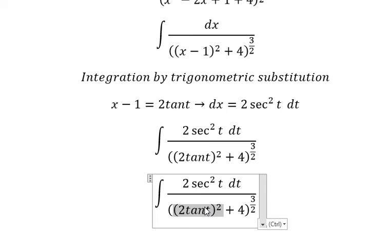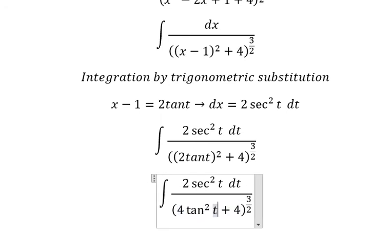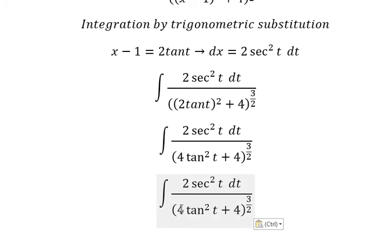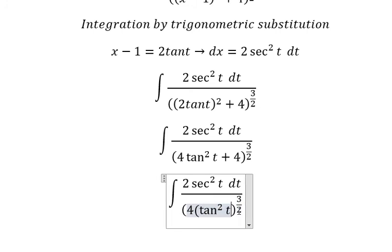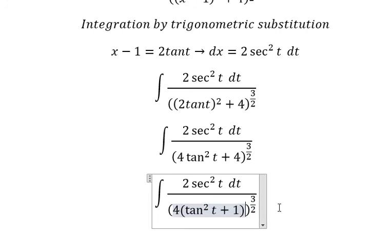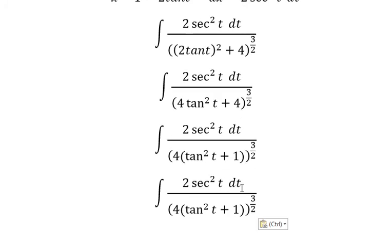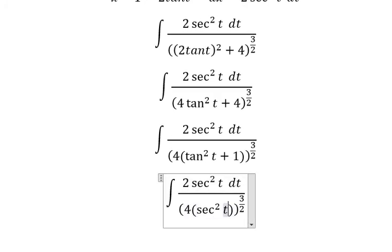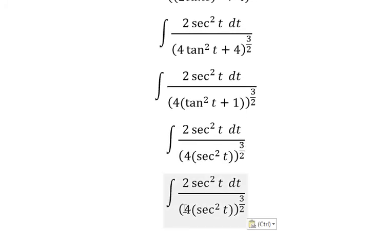We put 4 times tan squared t, so we can do factorization of 4. This changes to sec squared t. We have 4 to the power of 3/2 and sec squared t to the power of 3/2.